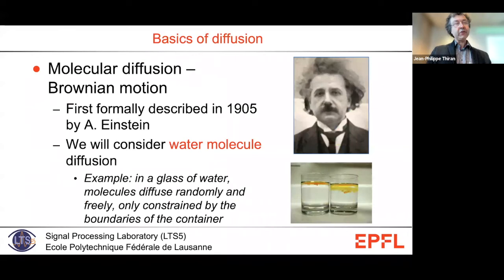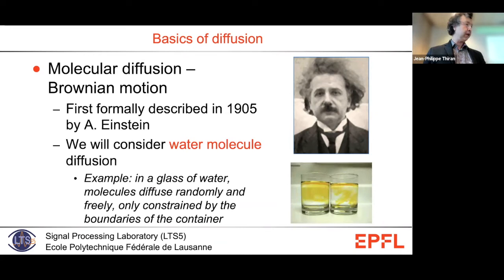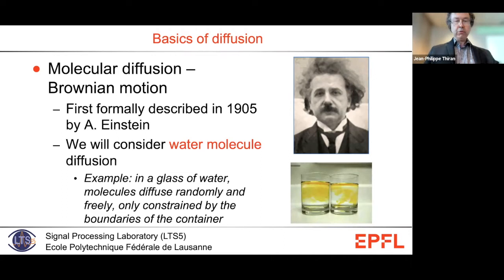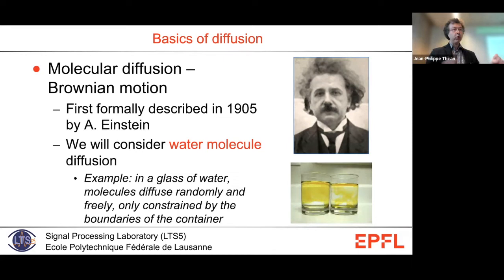We're talking about diffusion MRI. Diffusion is the Brownian motion you get in any continuous medium — when molecules are not at absolute zero temperature, they move naturally. You've all done the experiment with a glass of hot water and a glass of cold water: you put a drop of ink and you see the Brownian motion by the mixing of the ink at different speeds. In a continuous medium like a glass of water, the diffusion is homogeneous, the same in all directions, and constrained only by the container.